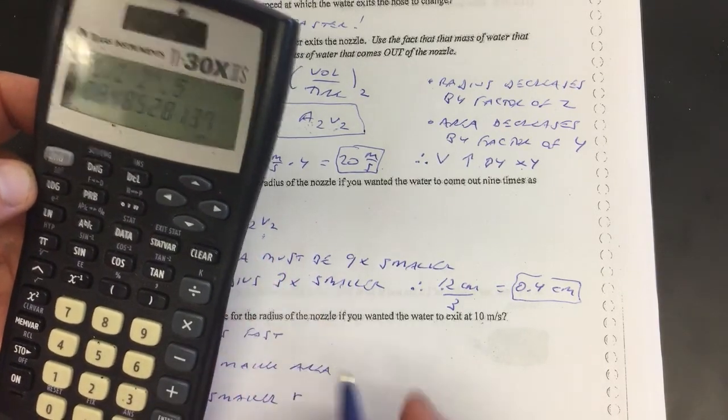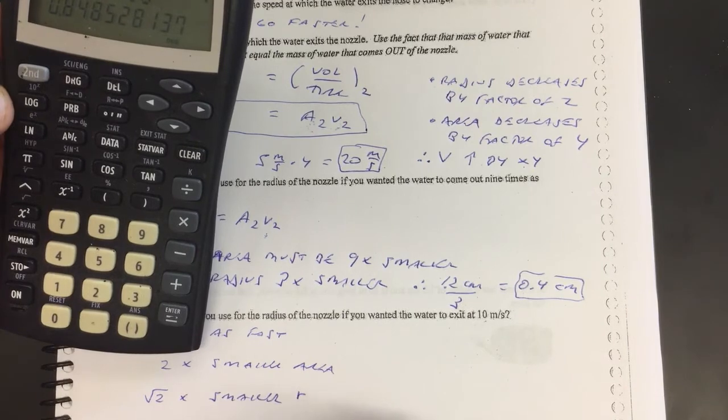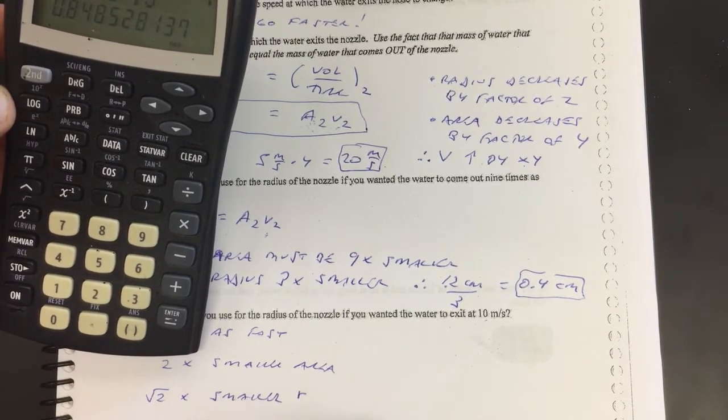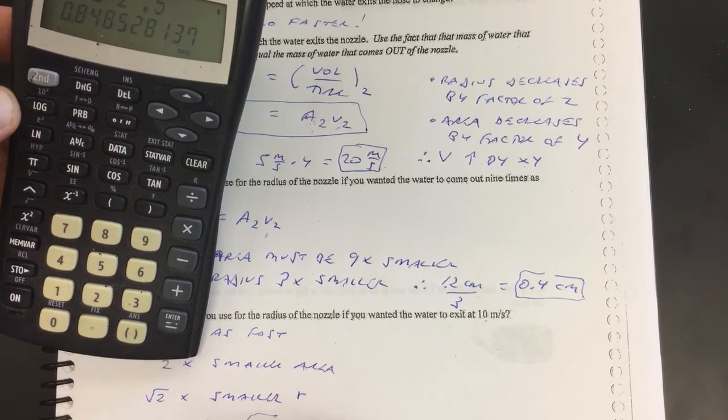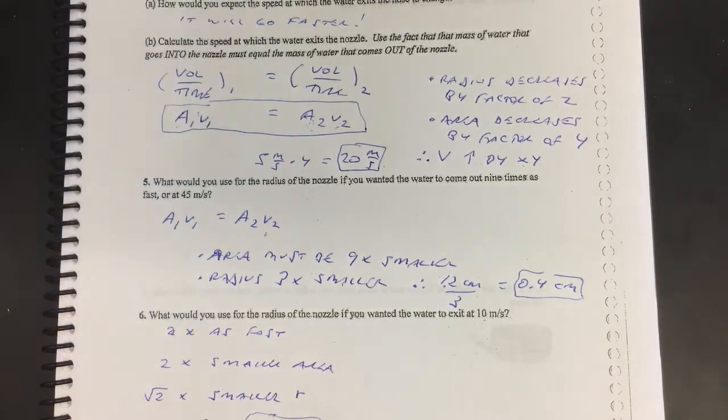So if you make, if you shrunk the radius by that much, it would come out twice as fast. You'd reduce the radius by root 2, and that reduces the area by 2, which makes it come out twice as fast.